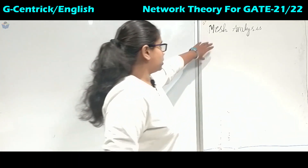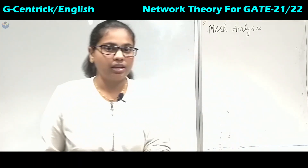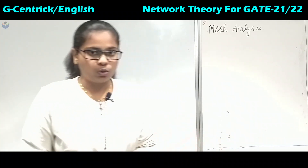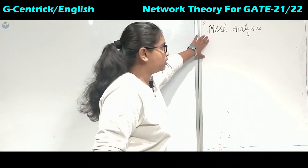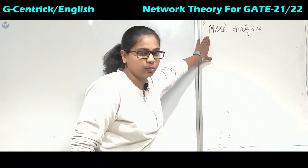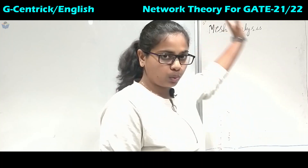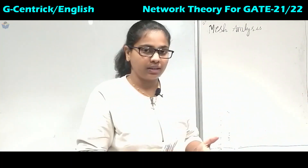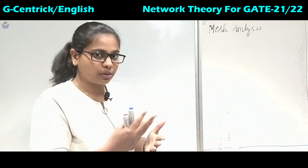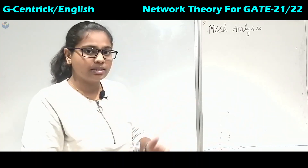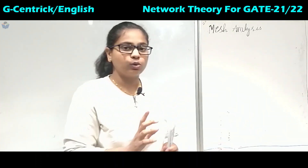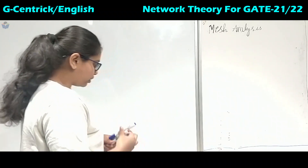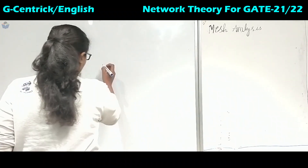Coming to the word 'mesh' — what does it mean? There is a confusion between the words mesh and loop. A mesh is nothing but the smallest loop in the circuit. A loop can have many loops within it, or multiple loops, or it can be a single loop. But the smallest loop in the whole circuit is called a mesh. We will understand this with an example circuit diagram.